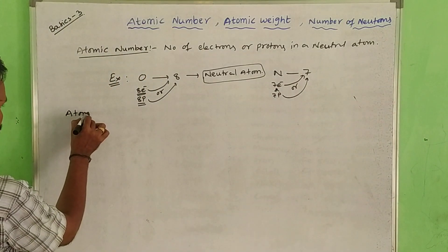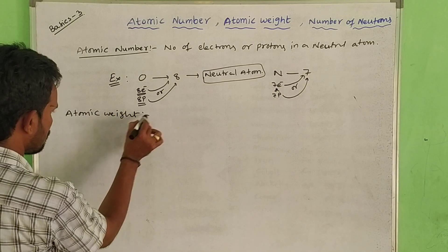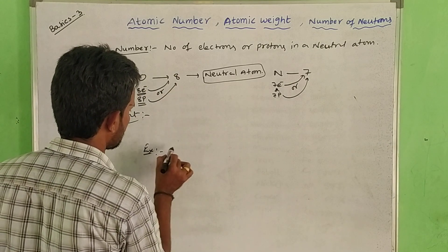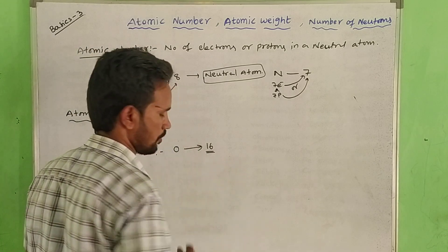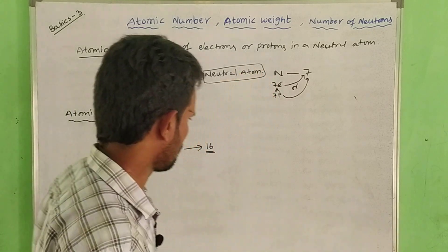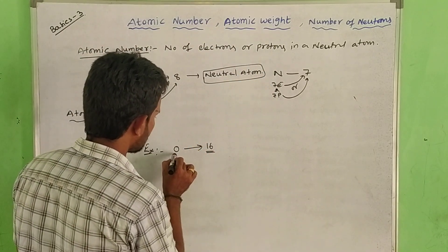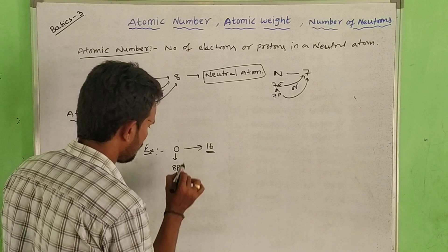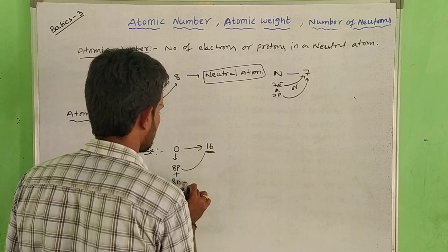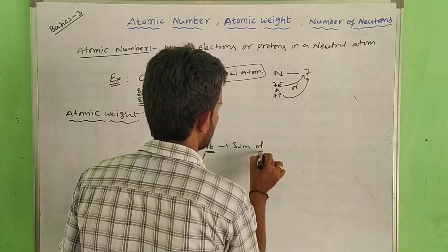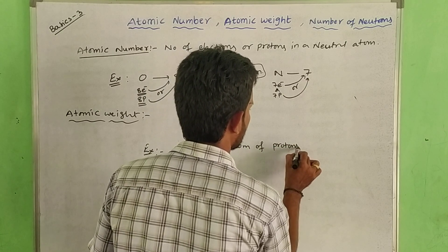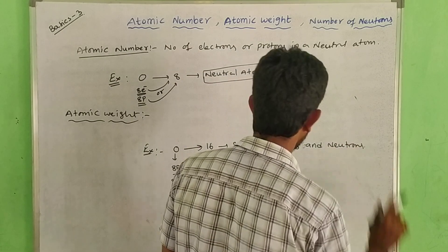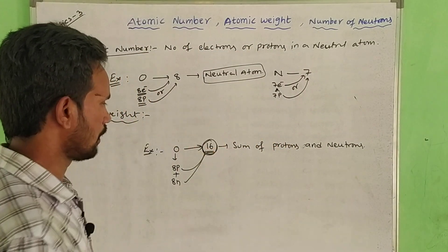Next one: atomic weight. What is atomic weight? Atomic weight is measured in grams. For example, let's take oxygen. Oxygen's atomic weight is 16 grams. Oxygen has 8 protons and 8 neutrons: 8 plus 8 equals 16. So atomic weight is simply the sum of protons and neutrons.